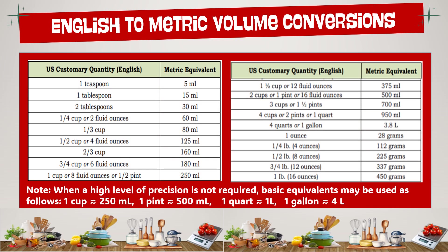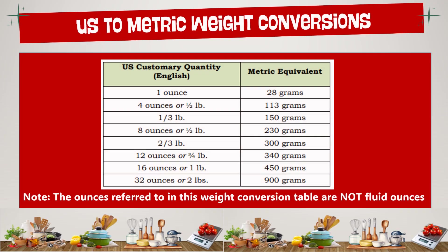The table below shows the English to metric volume conversions. When a high level of precision is not required, basic equivalents may be used: one cup equals 250 ml, one pint equals 500 ml, one quart equals one liter, and one gallon equals 4 liters. Another English to metric conversion table follows. Note that the ounces referred to in the weight conversion table are not fluid ounces.